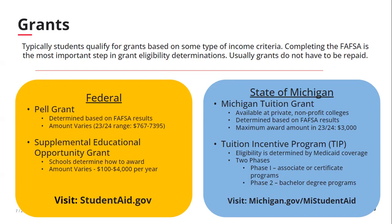In addition to the Federal Pell Grant, there's also the Federal Supplemental Educational Opportunity Grant, or FSEOG. Each college establishes policies for awarding FSEOG, so the amount you receive at one college may differ from another. The state of Michigan also has a grant program called the Michigan Tuition Grant, or MTG, which is only available at private colleges such as Baker College. MTG is awarded to Michigan residents who complete a FAFSA by May 1st and are attending a private college in the state of Michigan.